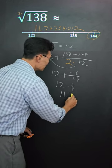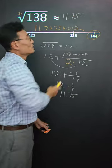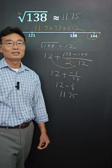Which is 11.75. So our approximate of square root of 138 will be 11.75.